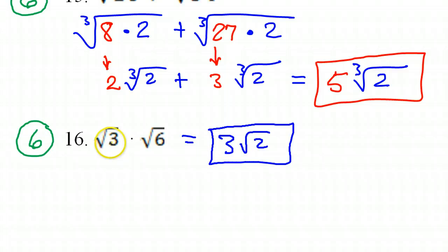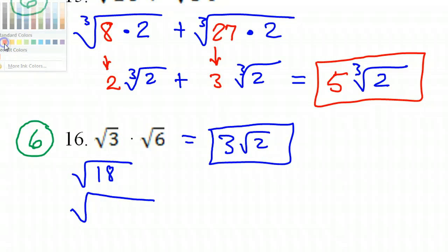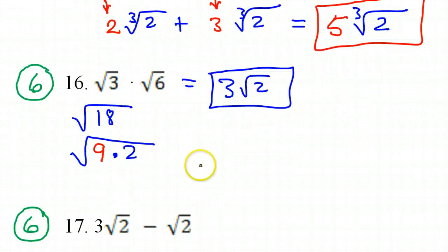So first of all, one thing you can do, because these are both square roots, we can multiply them together. So 3 times 6 is 18. So this is the same thing as the square root of 18. Now, what perfect square divides evenly into 18? Well, that would be 9. 9 times 2. So I can now write this as the square root of 9 times 2.